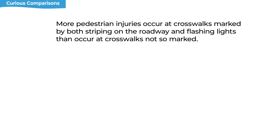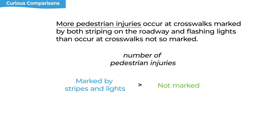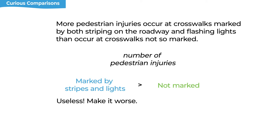In this example, what's being compared is crosswalks marked by stripes and lights versus crosswalks that are not. The comparison is that there are more pedestrian injuries happening at the marked crosswalks than the unmarked ones. The author concludes that these safety measures — the lights and stripes — are doing nothing, or even making the situation worse. But LSAT wants us to consider the alternate explanation: maybe these were the worst crosswalks to begin with, and the stripes and lights are there trying to make a bad situation slightly better.